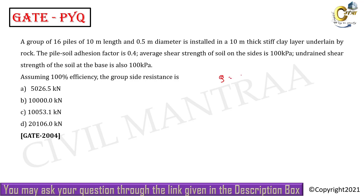So side resistance is asked — the formula for side resistance is: Q = c·Nc·A_base + α·Ca·A_surface. Here, the first term is base resistance and the second is side resistance. Since only side resistance is asked, we don't need the base resistance term. The formula becomes: Q = α·Ca·A_surface. Since 100% efficiency is given, we can calculate for one pile and multiply to get the total pile group resistance.